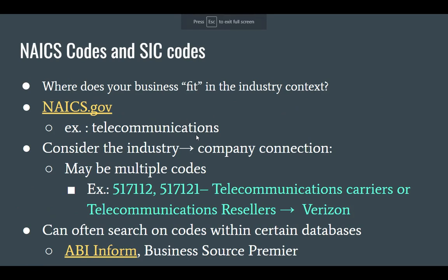A couple of other things to keep in mind as you're searching: remember to think about where your business fits — think about your industry. Think about the industry or industries most relevant to your company. One thing you might want to do is go to the NAICS.gov portal. NAICS codes stand for North American Industry Classification Systems. For example, we could look up telecommunications resellers — if you were looking at a company like Verizon or starting your own reseller of phones and technology, you'd want a general industry report, and you can gain these codes to get closer to searching by industry within the databases.